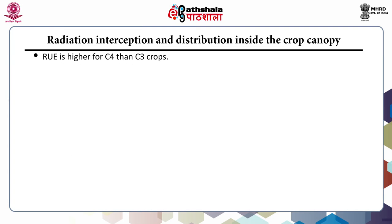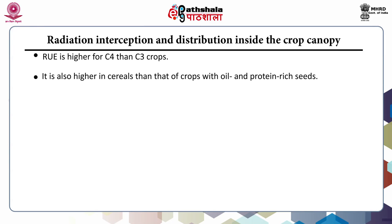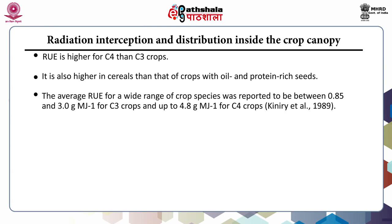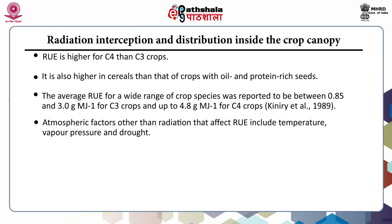Radiation use efficiency is higher for C4 than C3 plants, and also higher in cereals than in crops with high oil and protein content. The average RUE for a wide range of crop species was reported to be between 0.85 and 3 g/MJ for C3 crops and up to 4.8 g/MJ for C4 crops. Atmospheric factors other than radiation that affect RUE include temperature, vapor pressure, and drought.